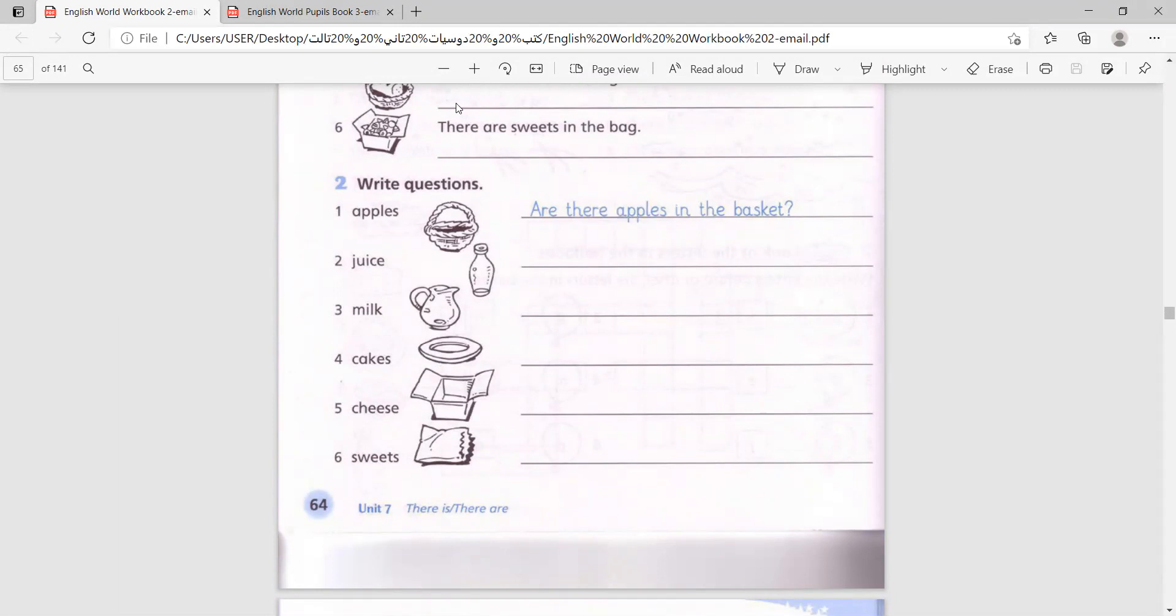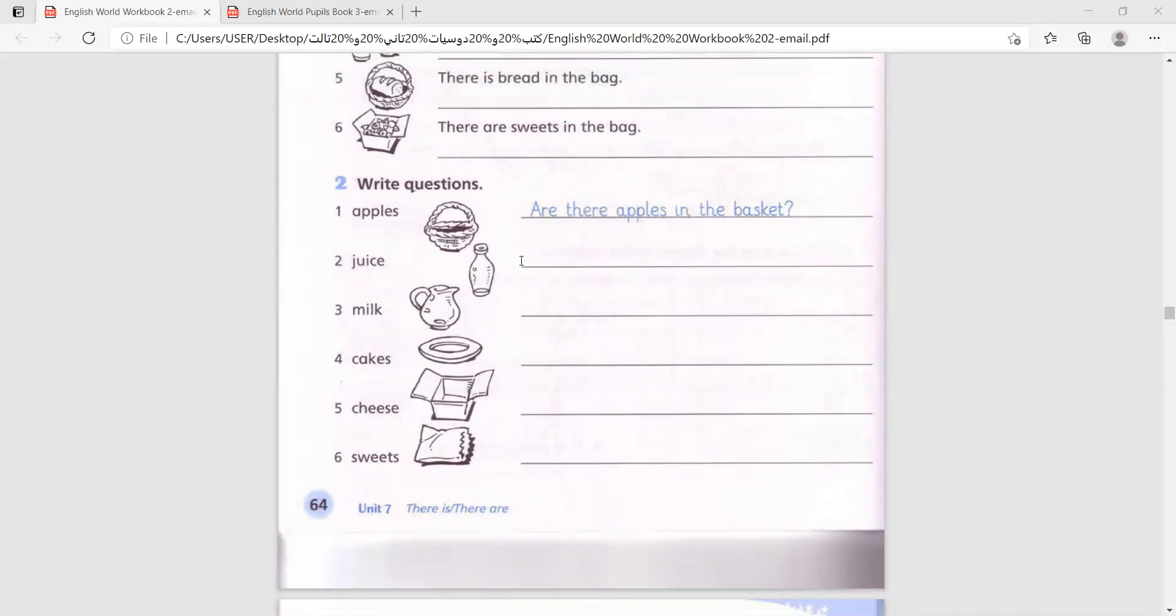Are there apples in the basket? Now juice - juice is uncountable. So we say is or are? Is, of course. Is there juice in the bottle?